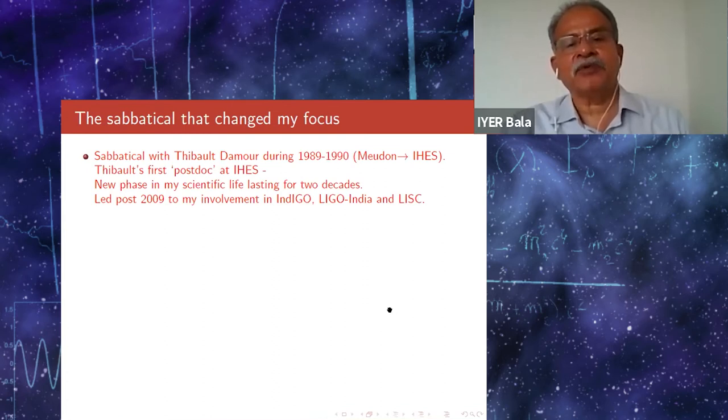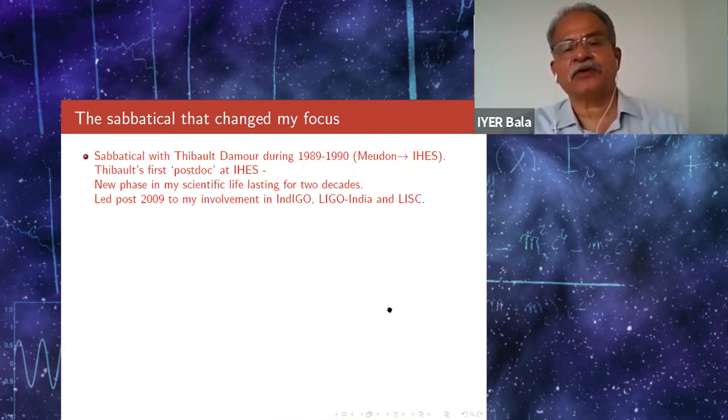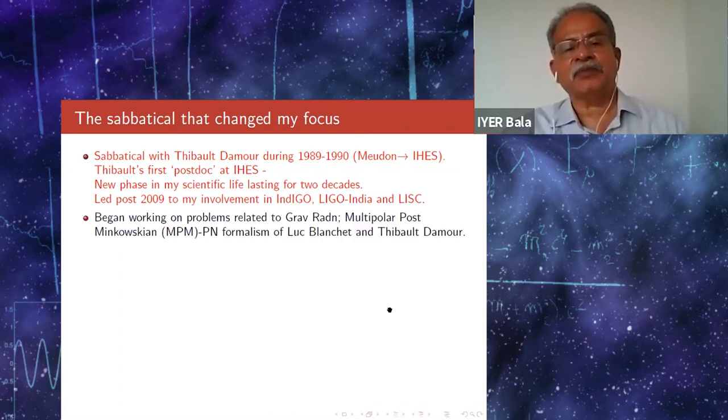My sabbatical with Thibaut Damour was during 1989-90 when he was himself moving from Meudon to IHES. In a sense, I was Thibaut's first post-doc at the IHES. It started a new phase in my scientific life which lasted for two decades and led post-2009 to my involvement in Indigo, LIGO India, and LIGO India scientific collaboration. I began working on problems related to gravitational radiation, the MPMPN formalism of Luc Blanchet and Thibaut Damour.